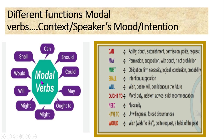This mind map or concept map contains different modal verbs and their functions. The function depends upon the context and the speaker's mood or intention. Let us observe some of the modal verbs. 'Can' can mean ability, doubt, astonishment, permission, or polite request.